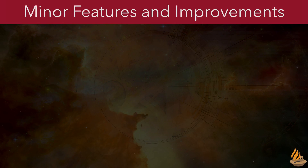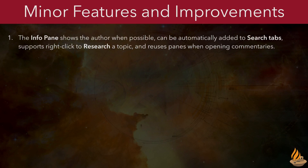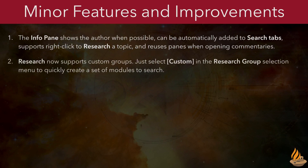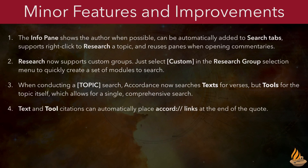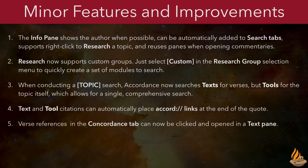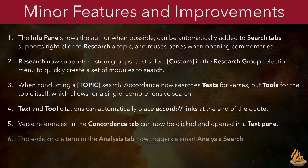There are lots of other smaller improvements in Accordance 12. Here's an even dozen of them. First, the Info Pane shows the author when possible, and it can automatically be added to search tabs, supports right-click to research a topic, and reuses panes when opening commentaries. Second, Research now supports custom groups — just select Custom in the Research Group selection menu to quickly create a set of modules to search. Third, when conducting a topic search, Accordance now searches texts for verses but tools for the topic itself, allowing for a single comprehensive search. Fourth, text and tool citations can automatically place Accord links at the end of the quote. Fifth, verse references in the Concordance tab can now be clicked and opened in a text pane. And sixth, triple-clicking a term in the Analysis tab now triggers a smart analysis search.